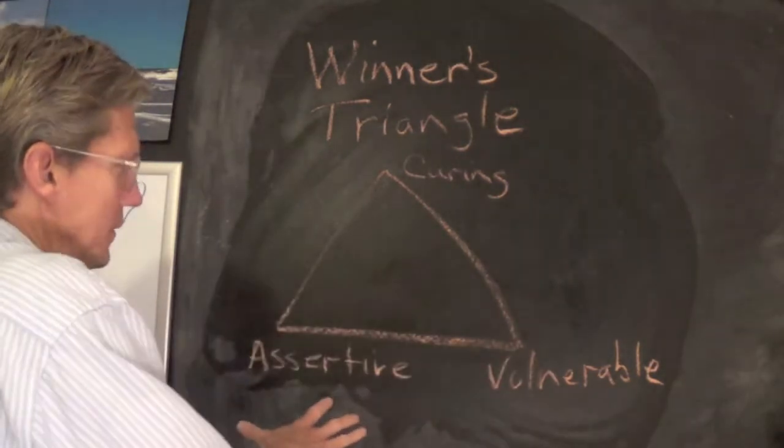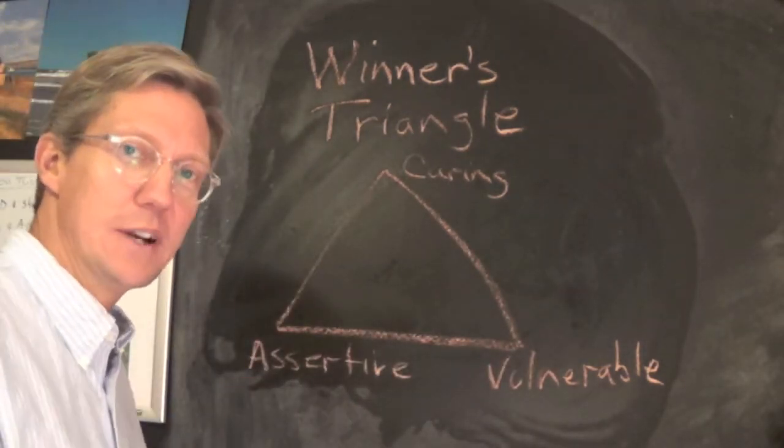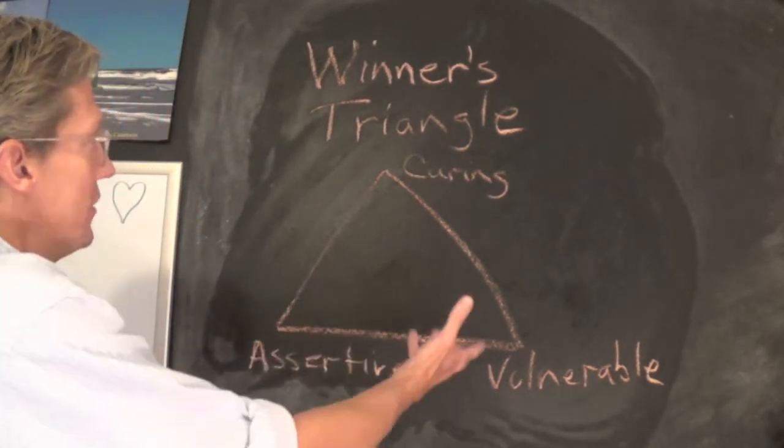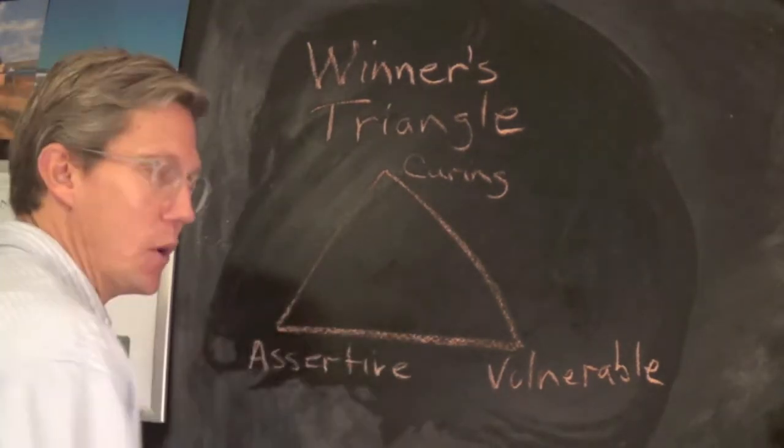These are three attributes that we are acting from. The winner's triangle is comprised of caring, assertiveness, and vulnerability.